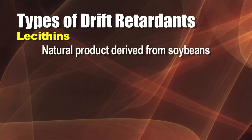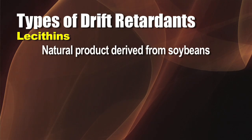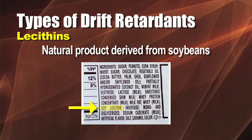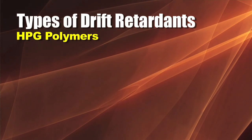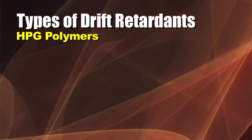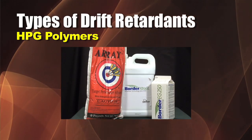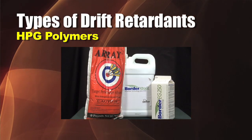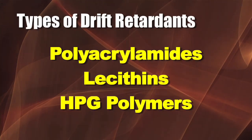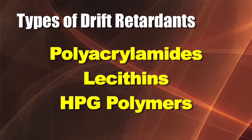There are also products called lecithins, which are natural products made from soy — you'll even see lecithin listed on a candy bar label. Then the newest products on the market are what we call HPG polymers, found in products like Array and Border. Those seem to work the very best on the market. So your choices are polyacrylamides, which are cheap, and HPG polymers, which are the most expensive — but that's what we use on our farm when we need a drift retardant.